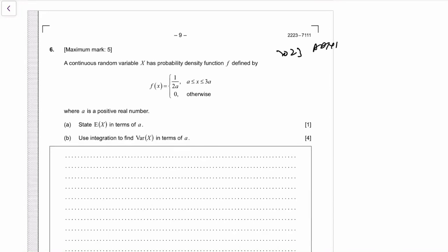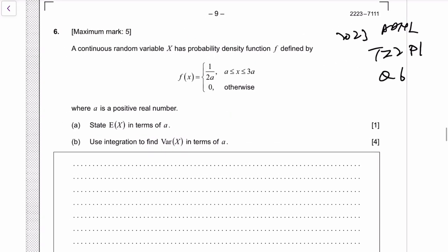2023 AHL, this is Time Zone 2, Paper 1, Question 6. It's a random variable question, seems to be quite popular lately. Similar to the setup, they give you the probability density function and ask for the mean.